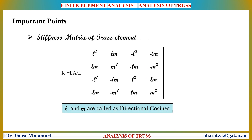The stiffness matrix of a truss element is represented by the following equation. In this equation, E corresponds to the elastic modulus of the material, A is the cross-sectional area, L is the length of the element, and small l and small m are called directional cosines. These directional cosines will be discussed in detail while solving the example. The stiffness matrix follows a specific pattern, which helps us to easily remember this matrix.